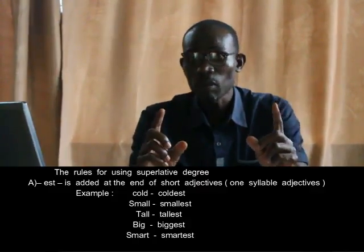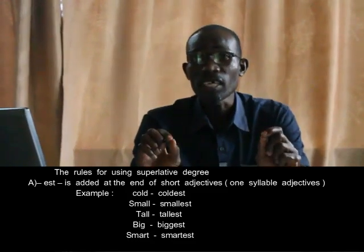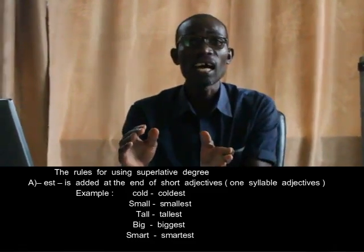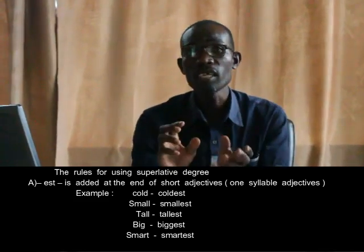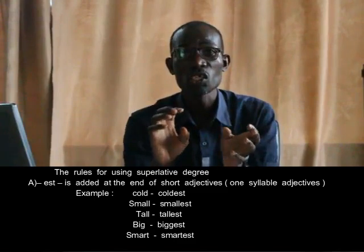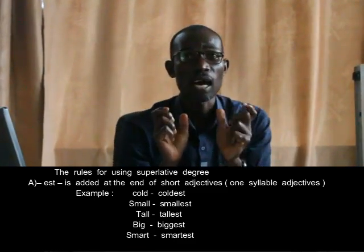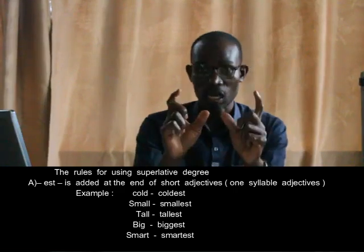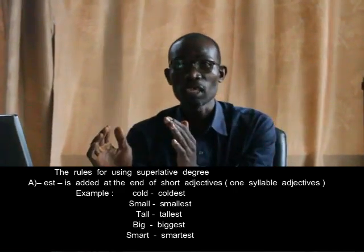Rule number one, which is very important: EST is added at the end of the adjective. These are short adjectives — one-syllable adjectives. For example, 'cold' is a one-syllable adjective.